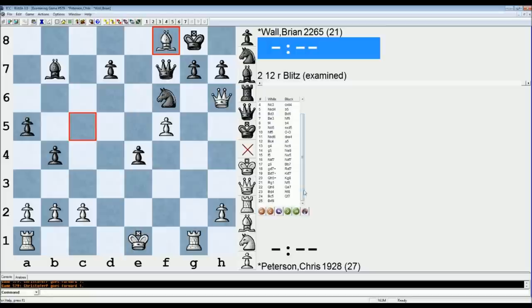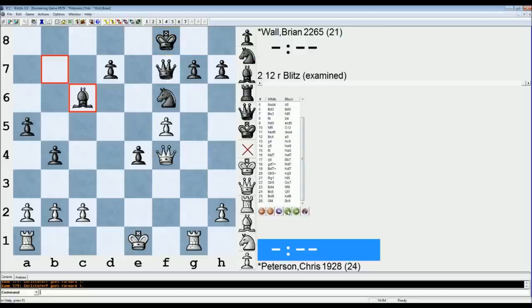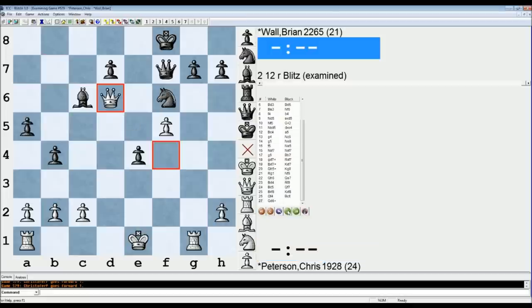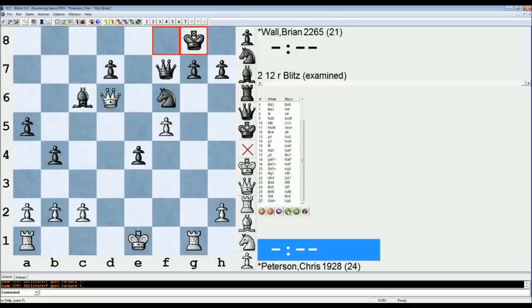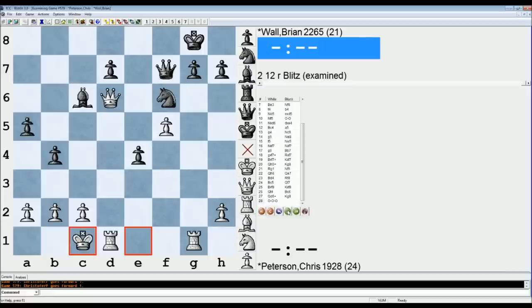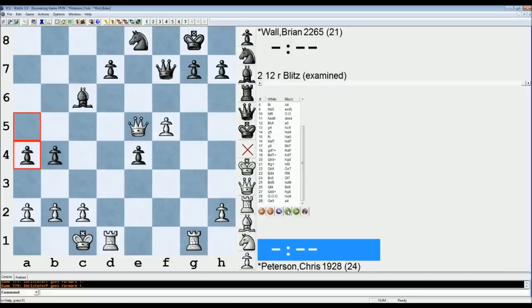25 king takes f8, queen f4, bishop c6, queen d6 check, king g8, castle's queen side, knight to e8, queen e5, a4, and f6.